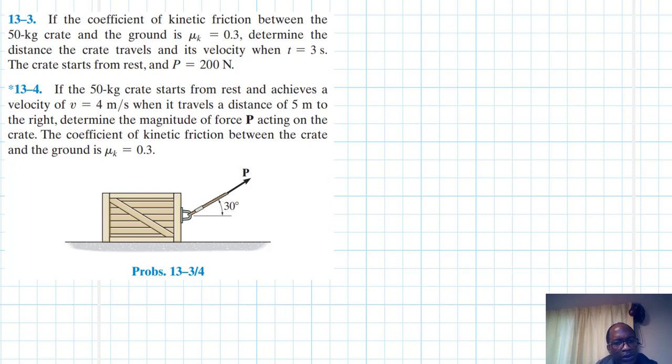Hello, I welcome you all to this another interesting screencast. The problem reads: if the 50 kg crate starts from rest and achieves a velocity of 4 meters per second when it travels a distance of 5 meters to the right, determine the magnitude of force P acting on the crate. The coefficient of kinetic friction between the crate and the ground is mu_k equal to 0.3.